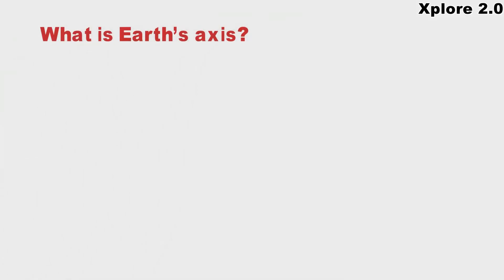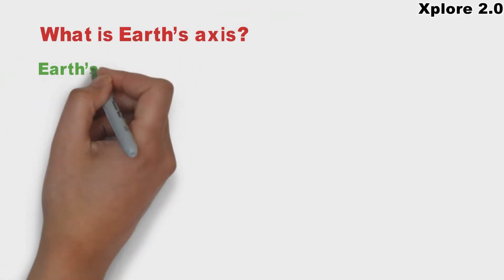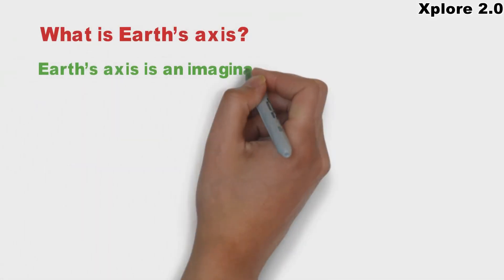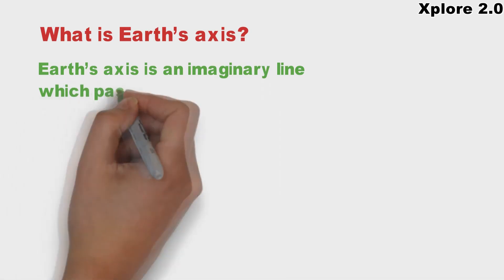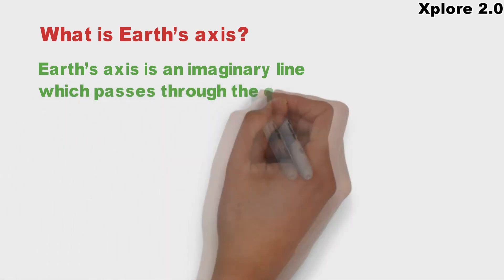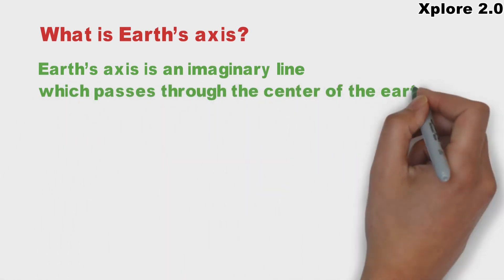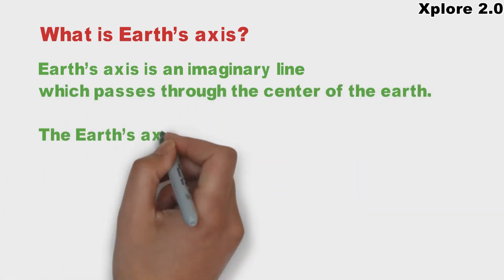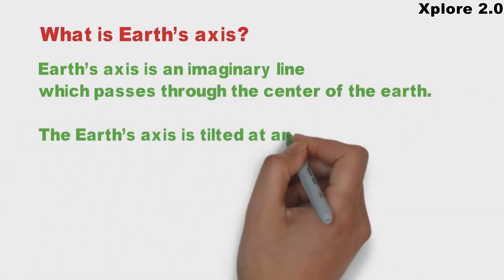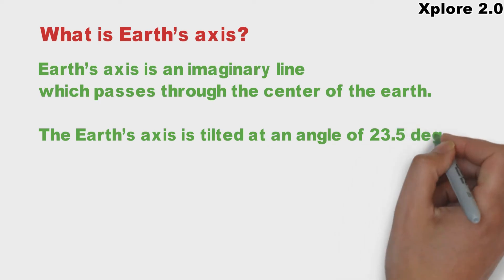What is Earth's axis? Earth's axis is an imaginary line which passes through the center of the Earth. The Earth's axis is tilted at an angle of 23.5 degrees.